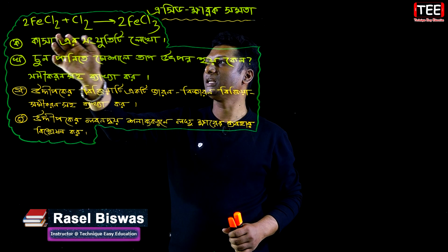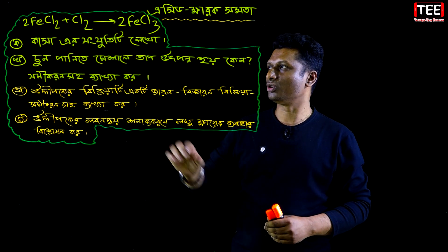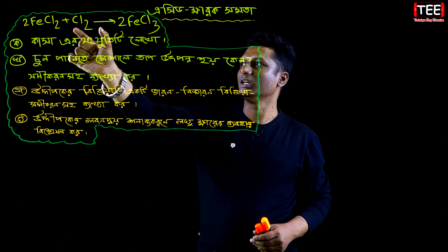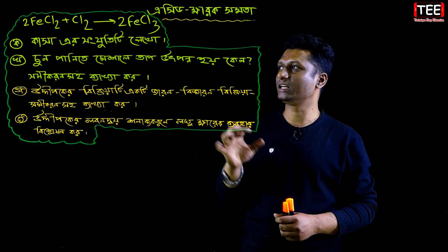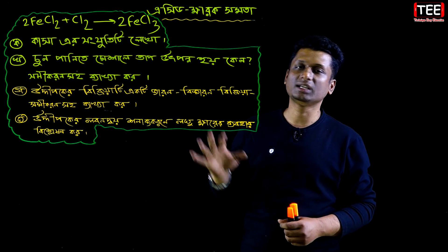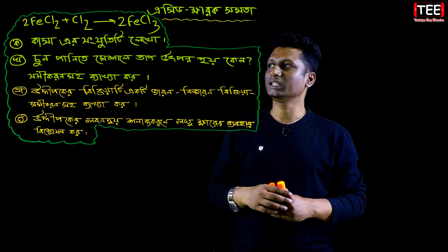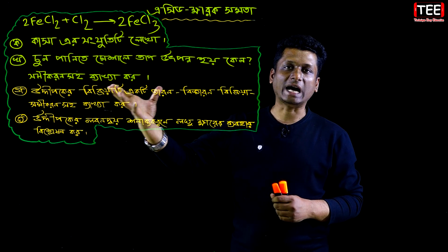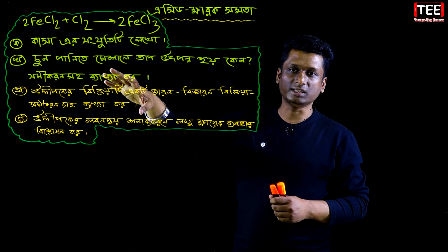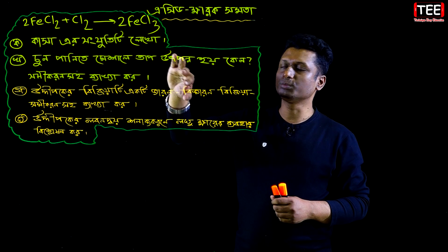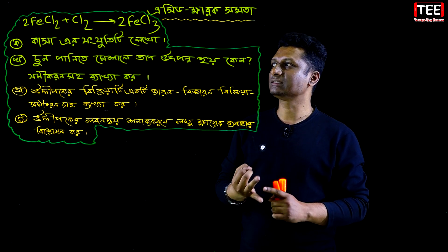Let's see — there is an increase in FeCl2, which is ferrous chloride, and chlorine. So ferrous chloride with chlorine gives ferric chloride. There is an increase in FeCl2, which is 1, and FeCl2 which is 1. This means that the answer is 1.